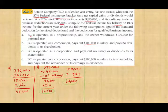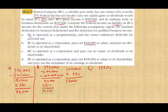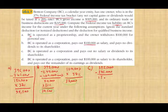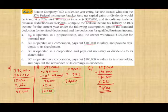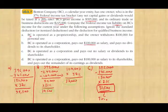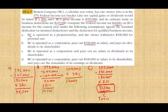Scenario C: BC is operated as a corporation and pays out no salary or dividend. We have $395,000 minus $245,000, giving $150,000 times 21%, which equals $31,500. Since the owner took out no salary and no dividend, that is the only tax under this scenario. Comparing A, B, and C — scenario C results in the lowest amount of taxes because the owner did not take out any salary or dividend.